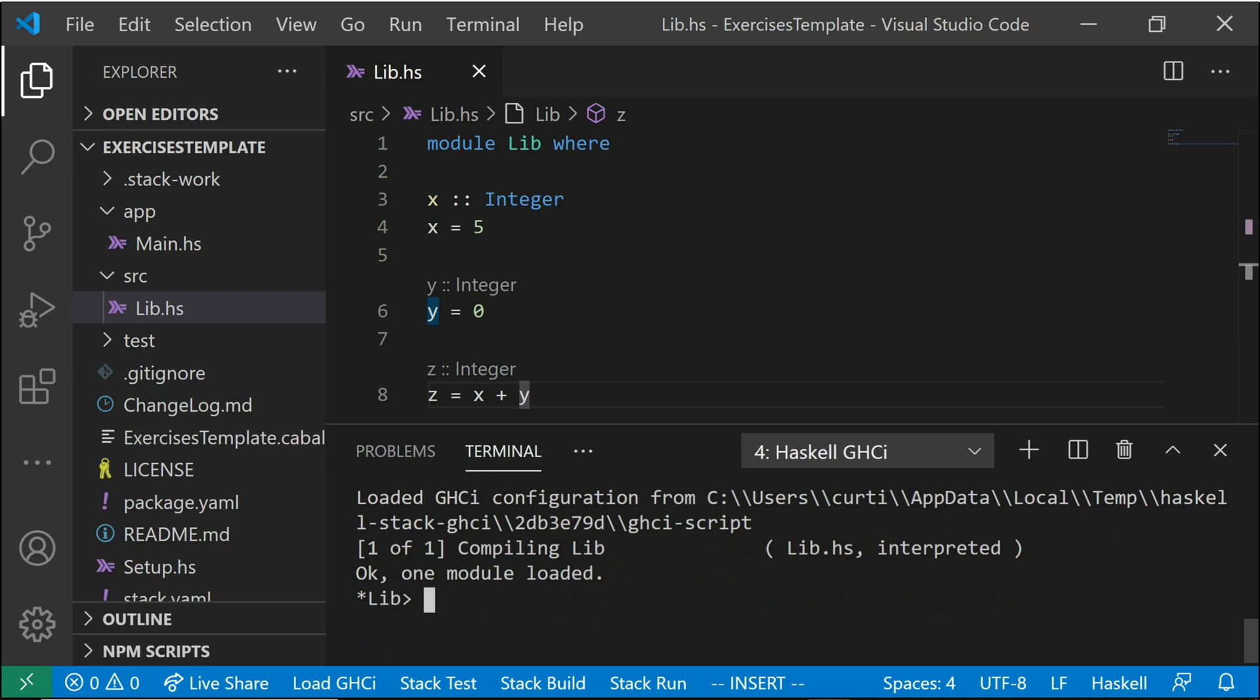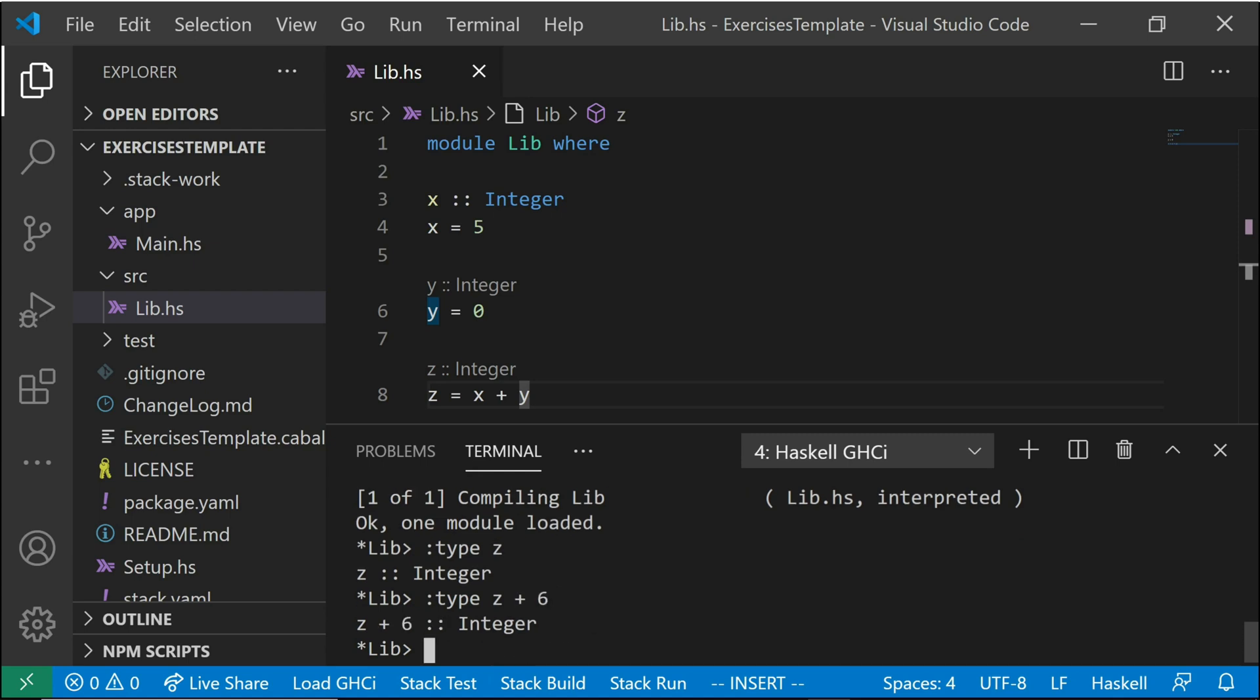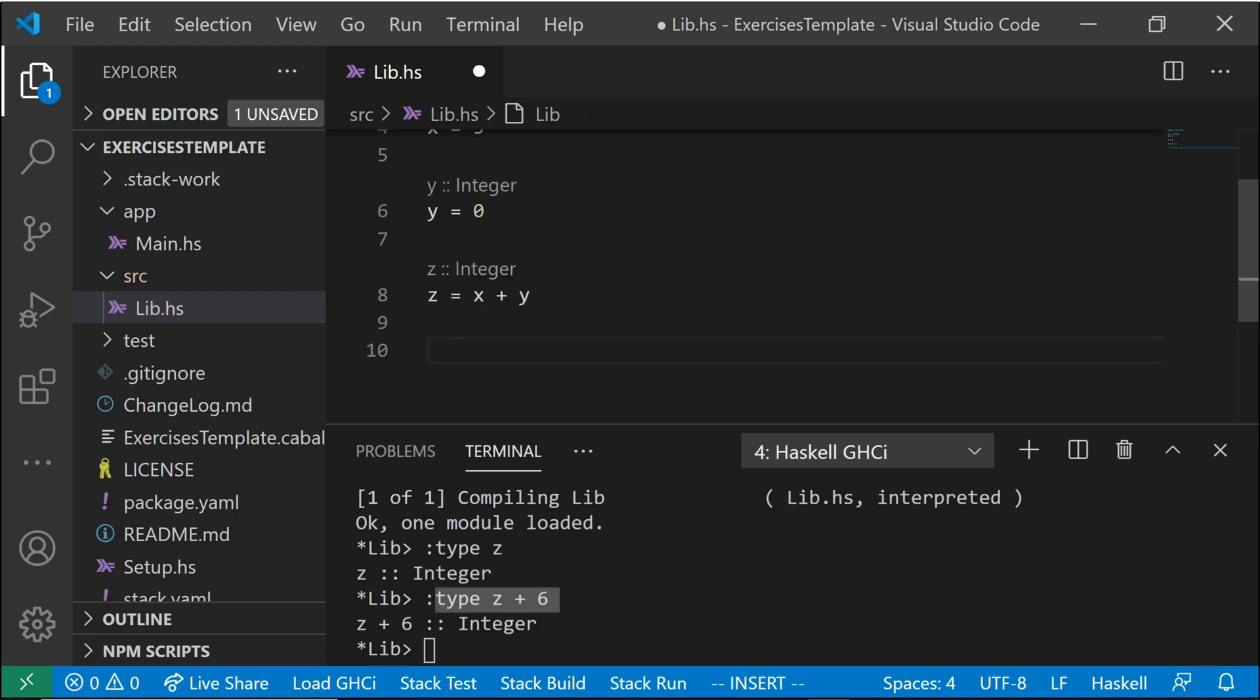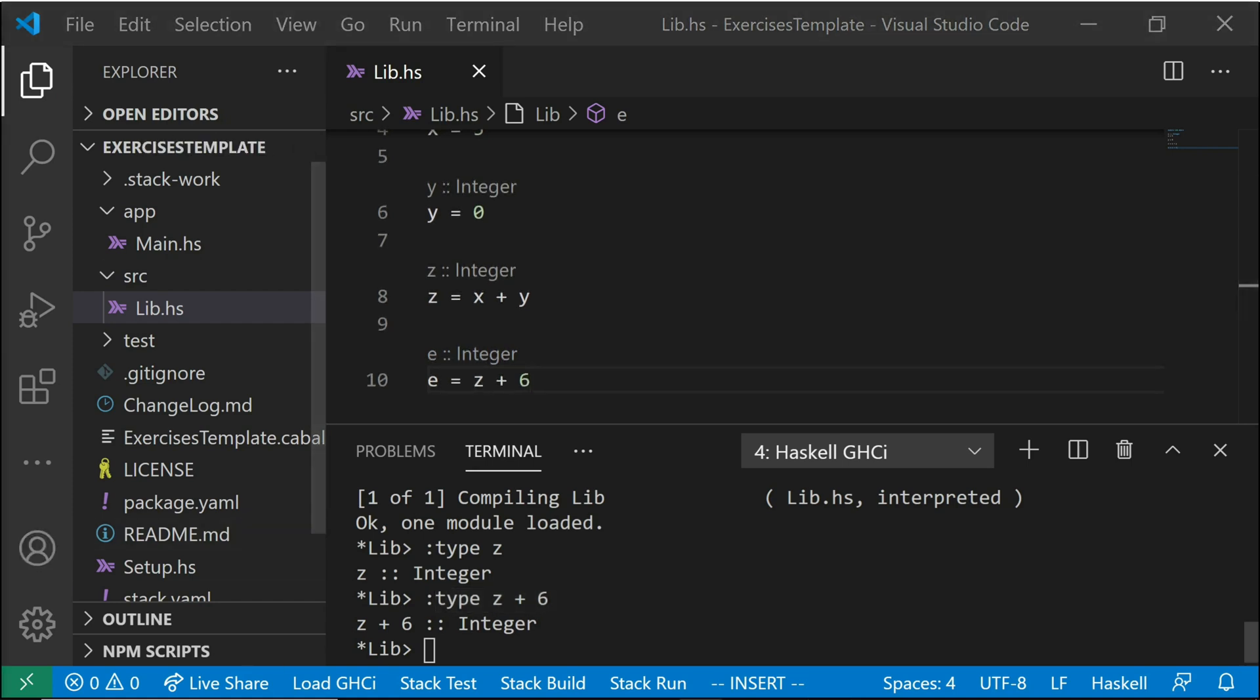And now we can ask it, what is the type of Zed? Colon type. It tells me Zed is an integer. Well, I already kind of knew that because of my nice fancy feature here. But I could also ask it like, what is the type of say Zed plus six? That's also an integer. And if you're ever wondering what the type of an expression is, you could ask GHCI like this, or you can just take advantage of the fact that we have a super fancy editor and you just write it inside here. So you can just write Zed. You'll have to assign it to something. So you'll have to be like E equals Zed plus six, and it'll appear right above. Pretty cool way.